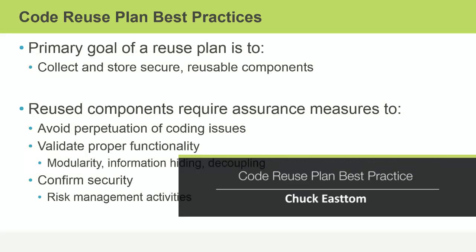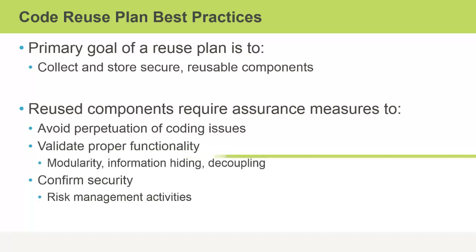Like most software development strategies, there are some best practices for planning your code reuse. Your primary goal of a reuse plan is to do the following: first, identify components that can be reused; then use those reusable components that are secure; and once you have those secure reusable components, collect and store them so that your development team can access and implement them in their various applications.